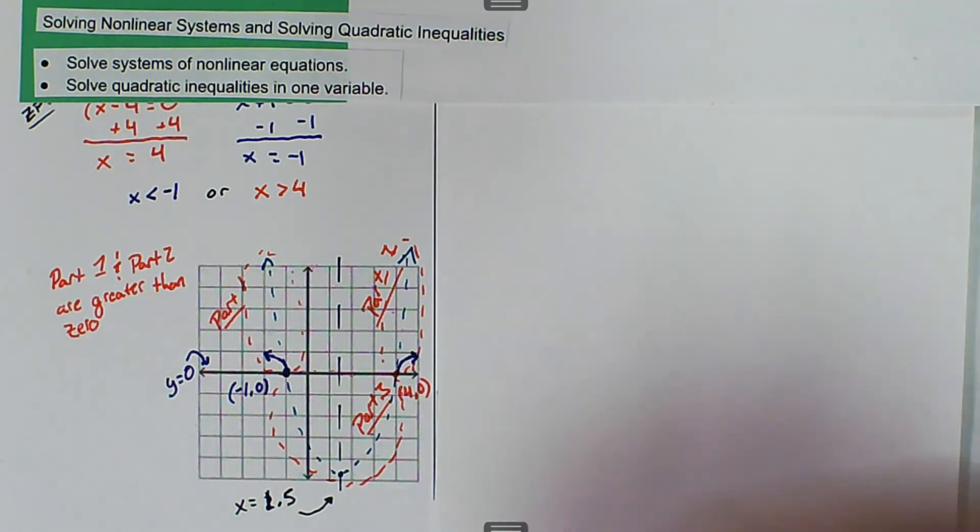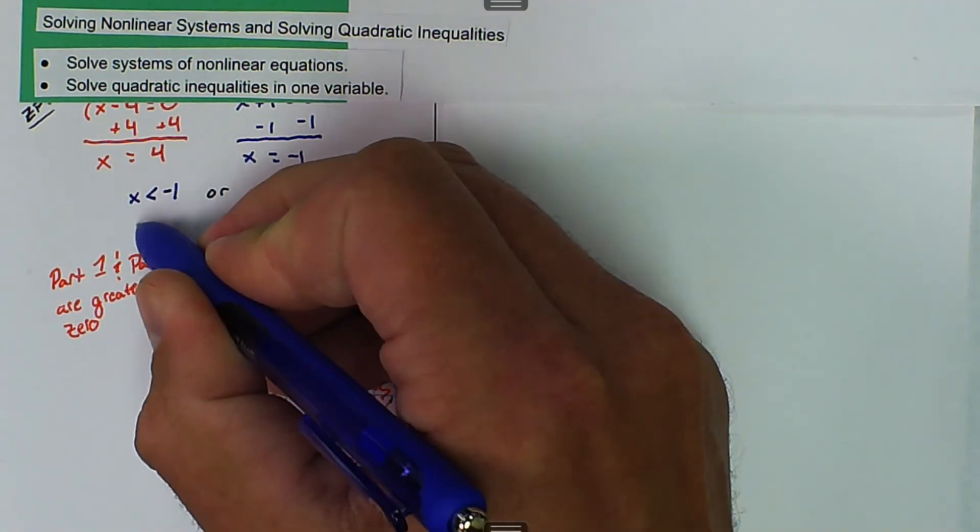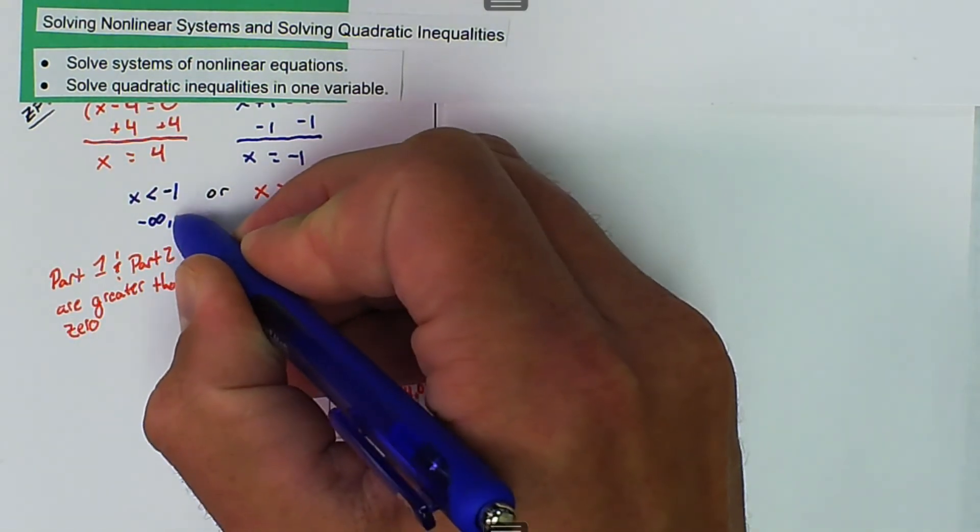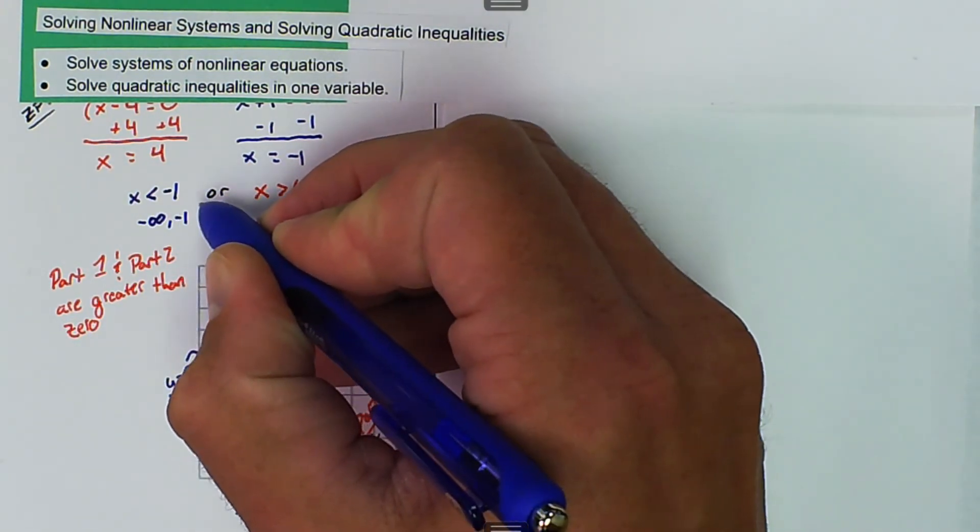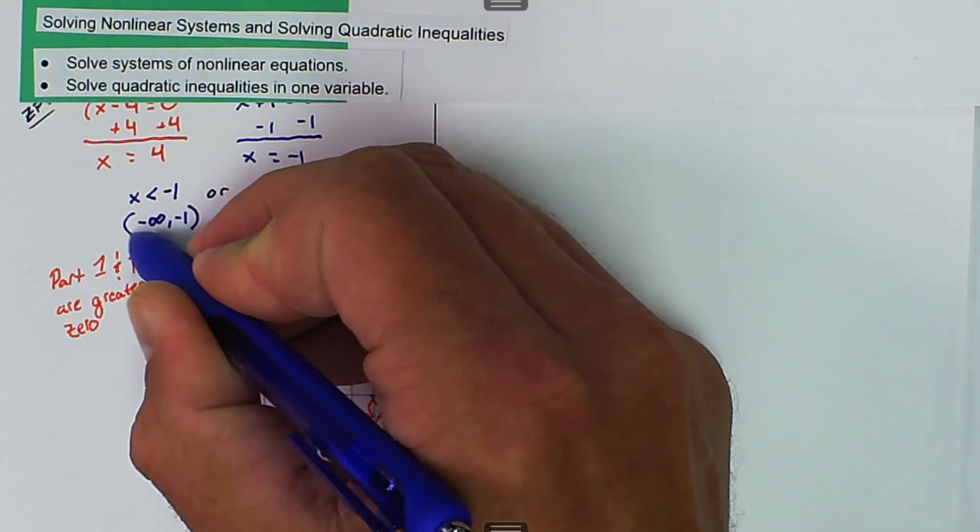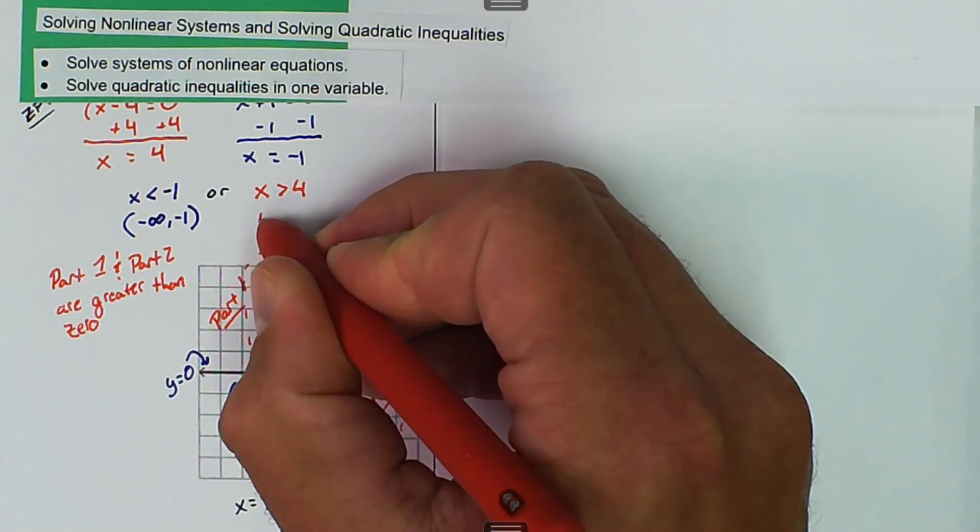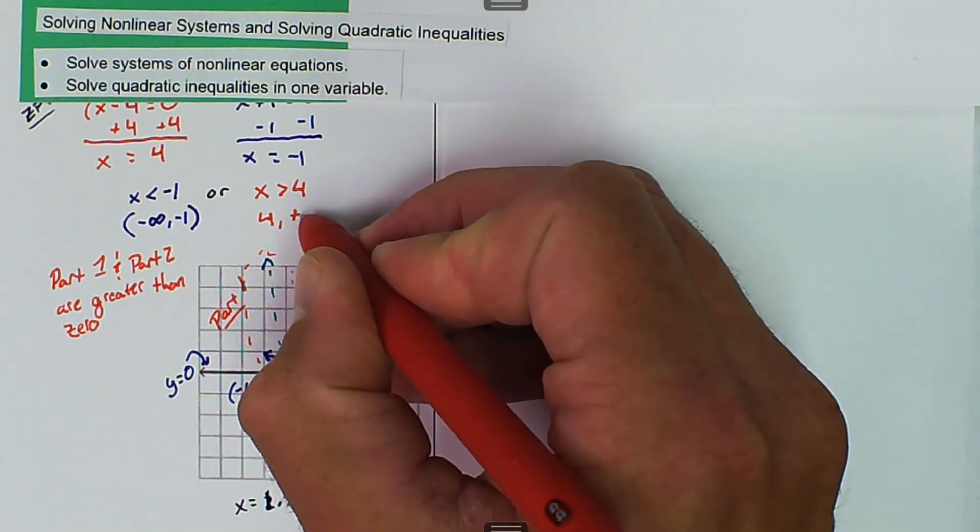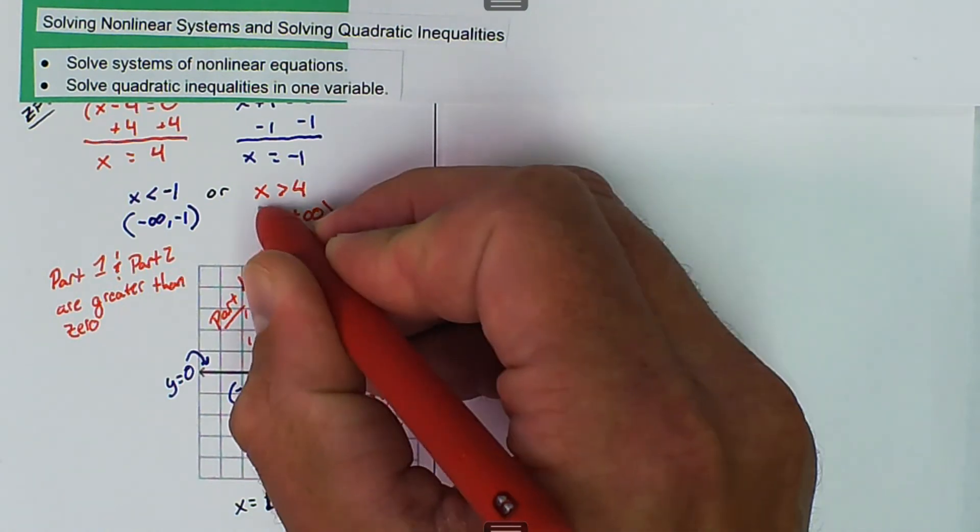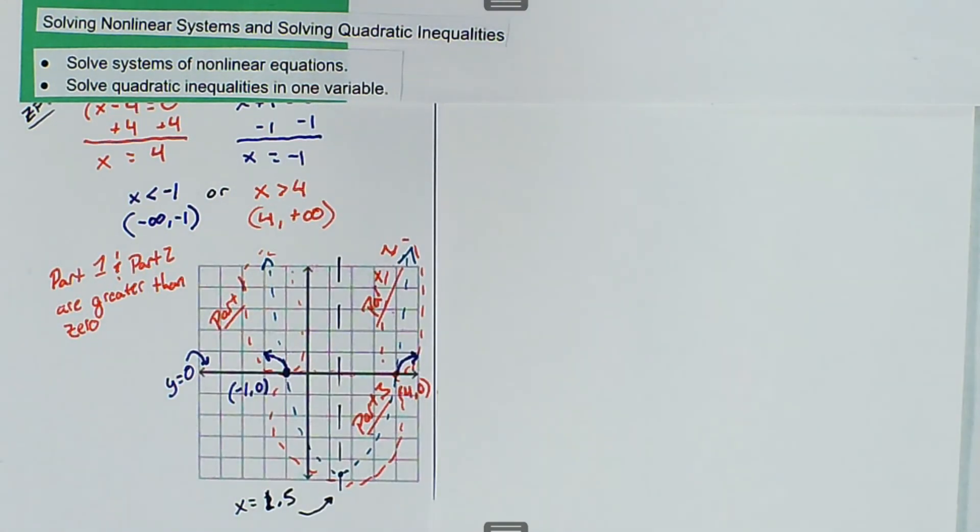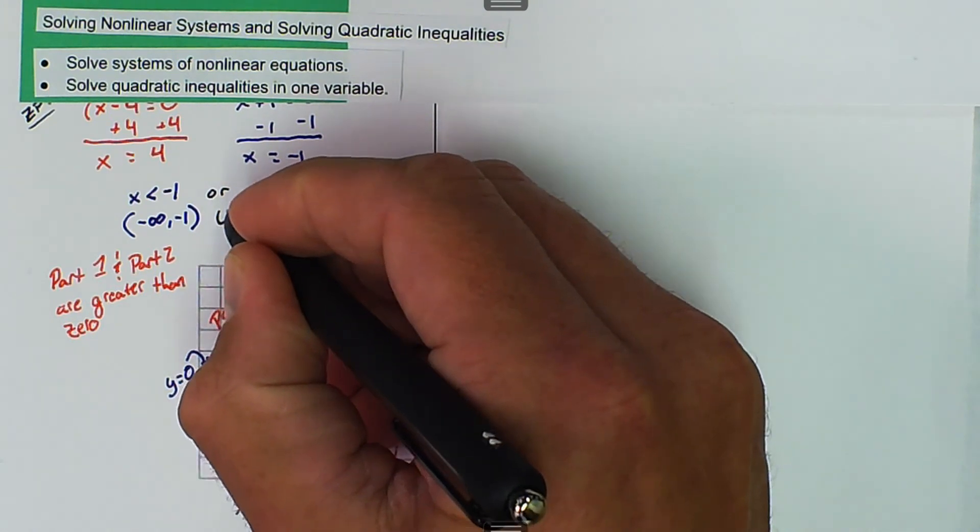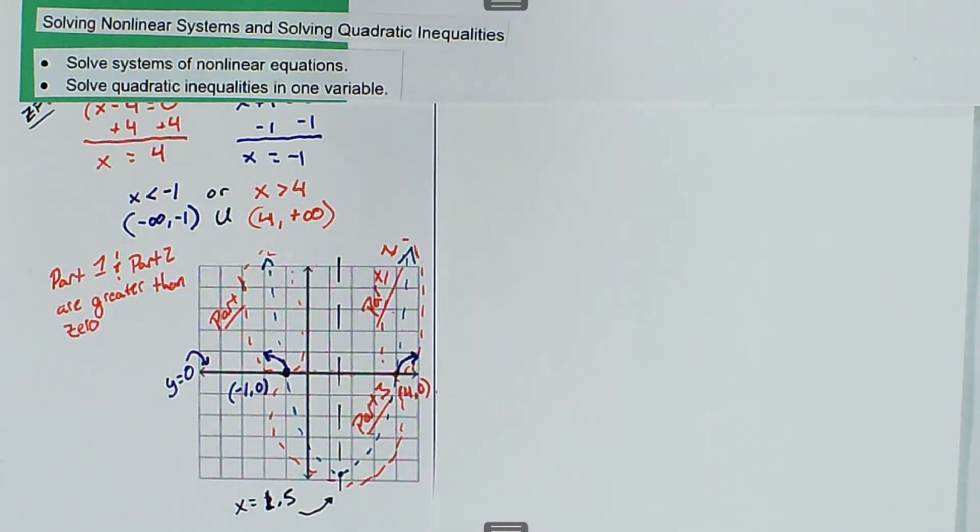And if we wrote that in interval notation, anything that's less than negative one, that would start at negative infinity and go to negative one. And then in this case, neither one are included because we don't have the equal to sign. And so here we'd start at four and we go to positive infinity and we'd use parentheses for both of that. And the symbol that we'd use here is union. So negative infinity to negative one, union four to positive infinity.